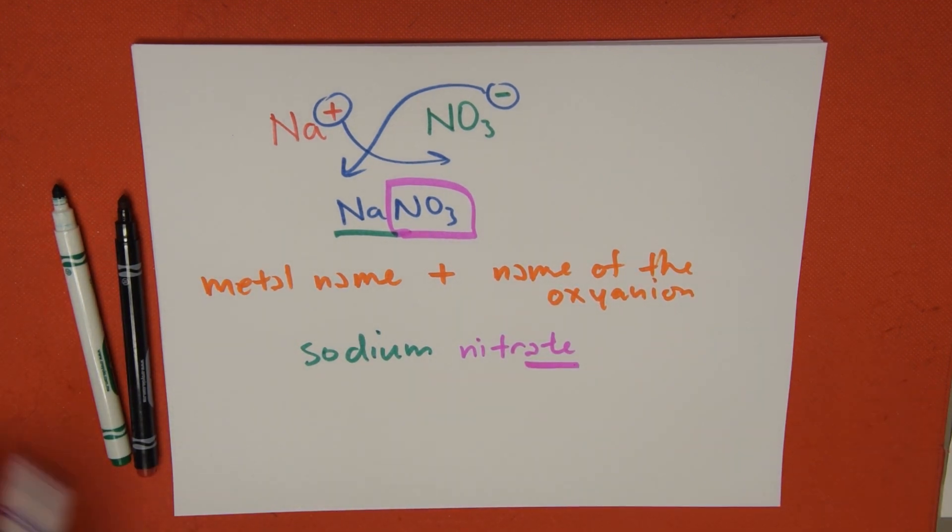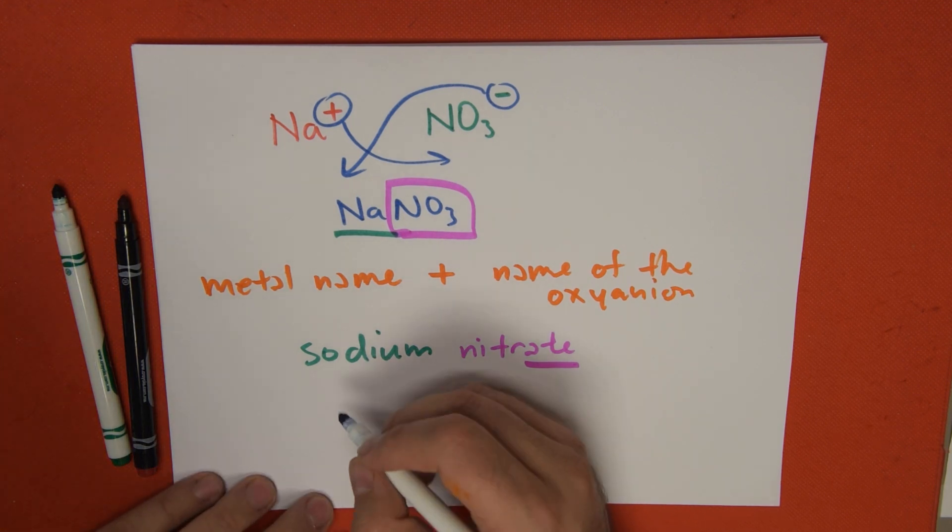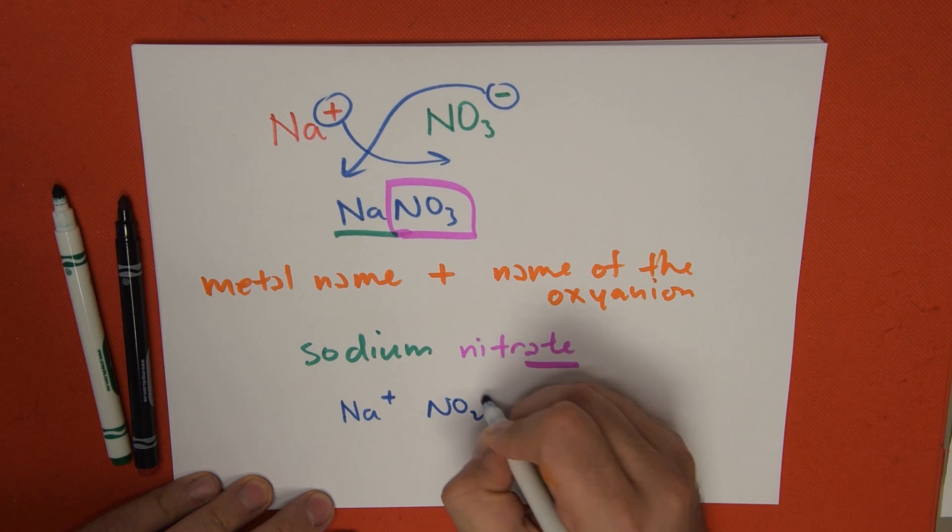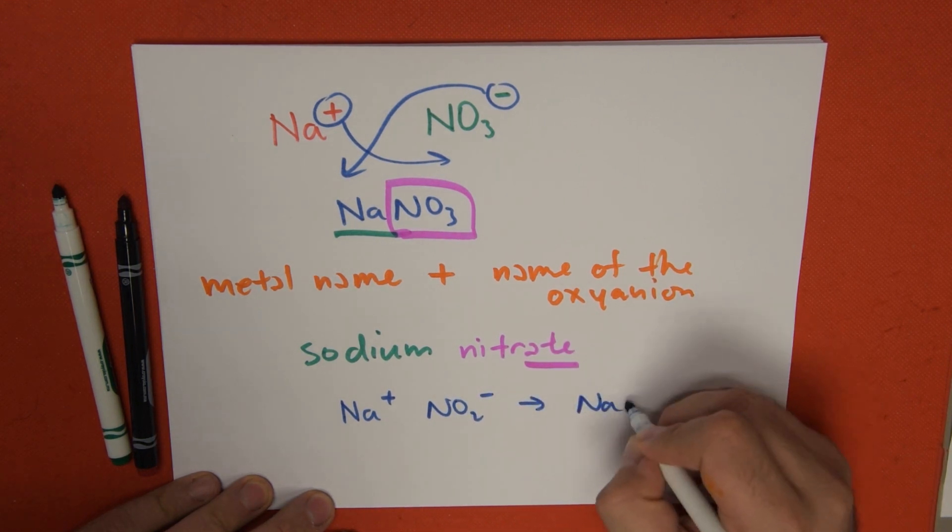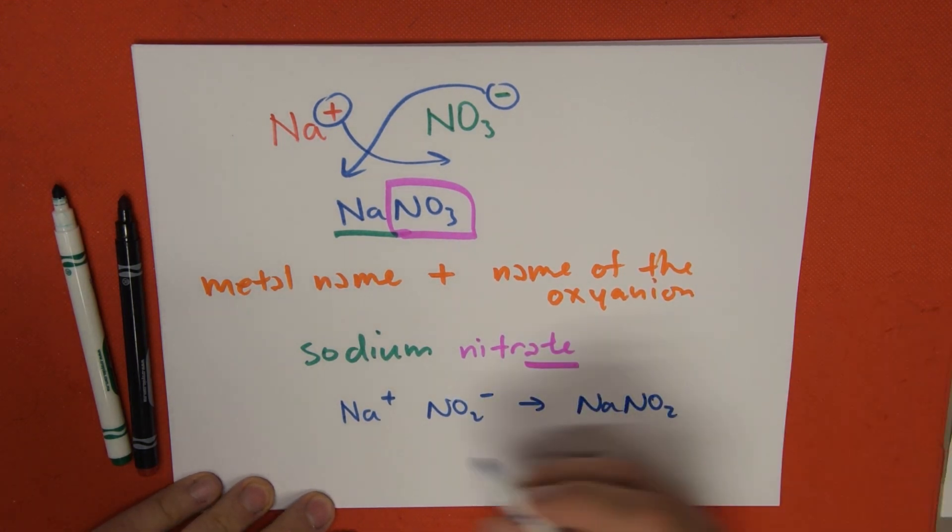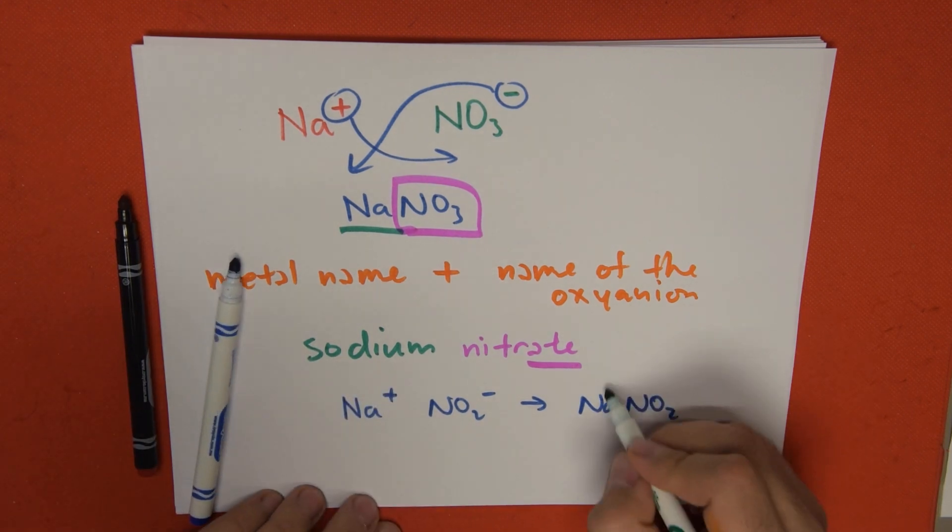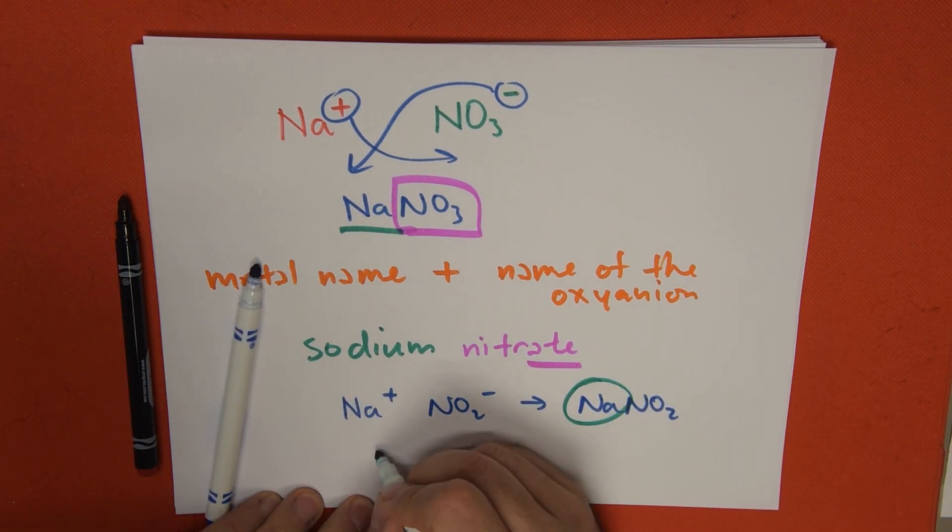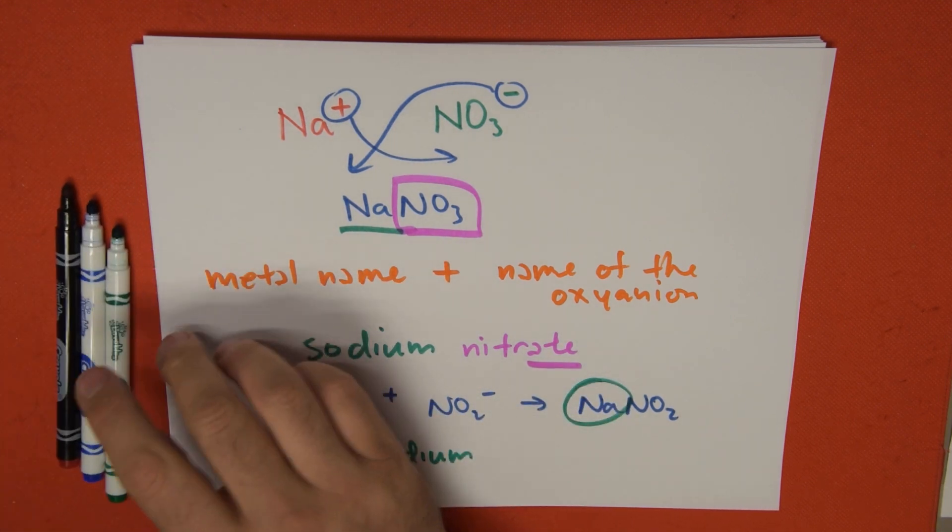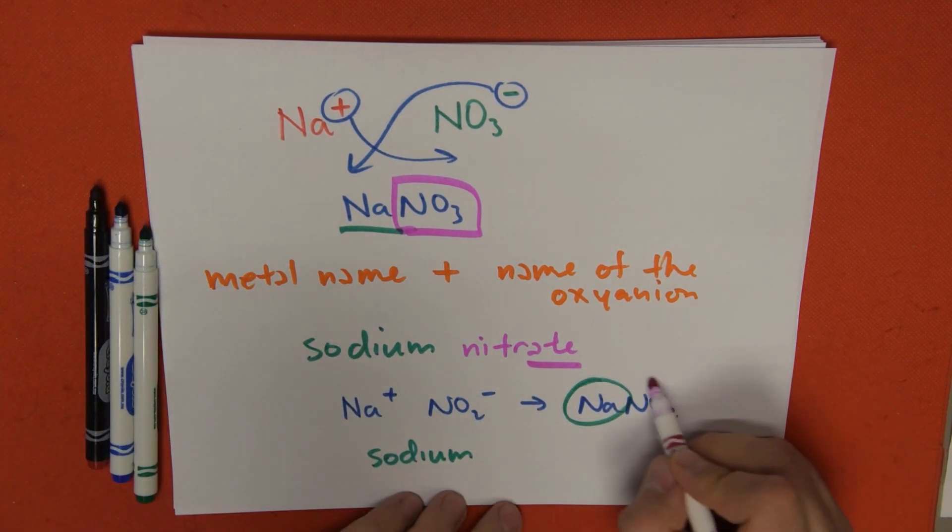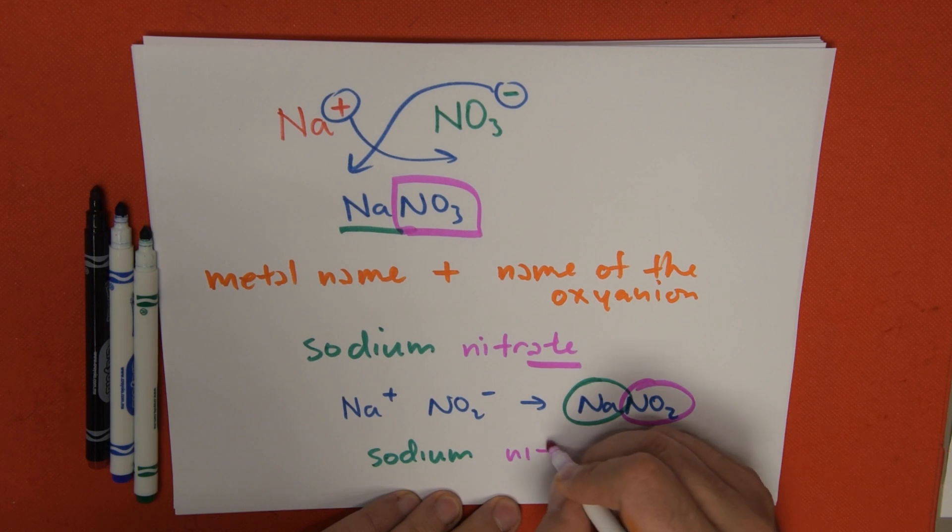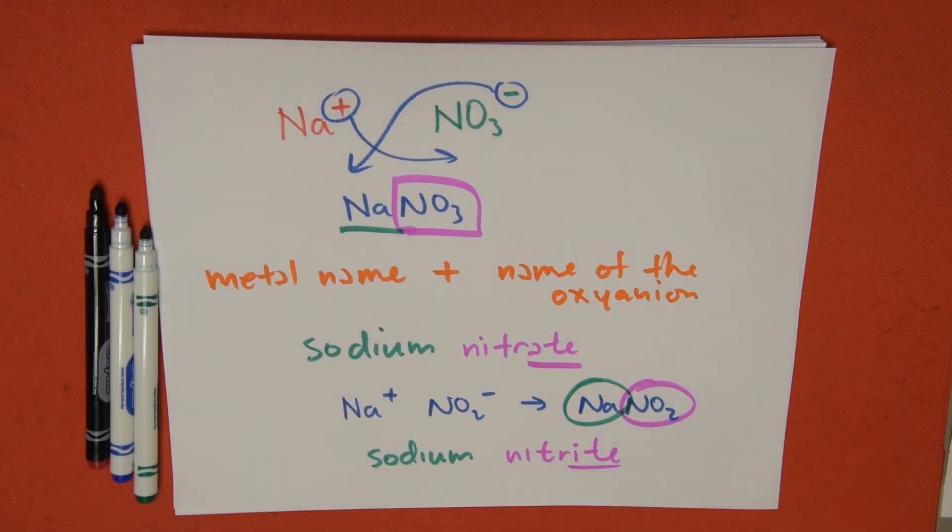Let's do another quick example. Sodium plus 1, NO2 minus 1. When we mix it, it's NaNO2. It's going to become, my cation is sodium, and when I look at my chart on my oxidation sheet, I'm going to get the word nitrite. Where did I get that from? From the chart.